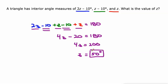So now we can figure out, 2z minus 10 would be 90. 50 times 2 is 100 minus 10 is 90. z minus 10 would be 40, 50 minus 10 is 40. And z would just be 50. So 90, 40, and 50, that adds up to 180 degrees.